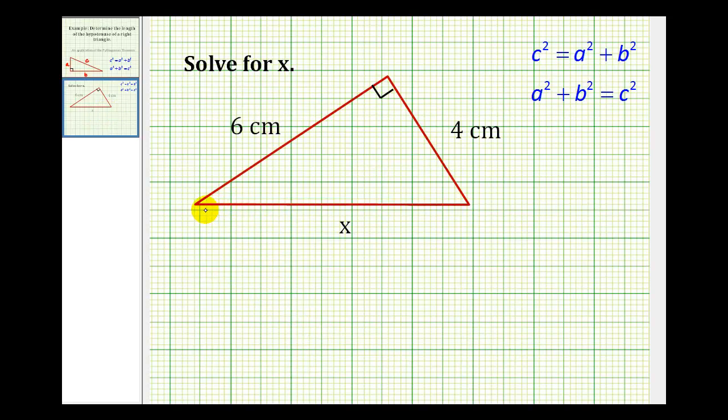Let's look at our example. Here we want to solve for X, which is the length of the hypotenuse. So this has to be C when applying the Pythagorean Theorem. And then again, A and B represent the length of the two legs. Let's call this A and we'll call this B.